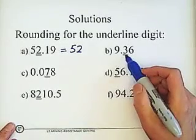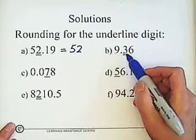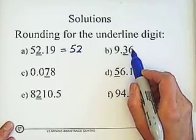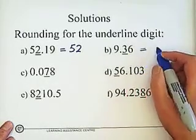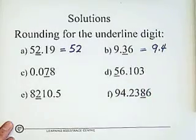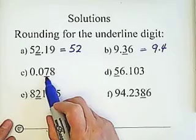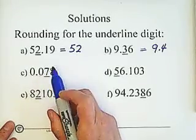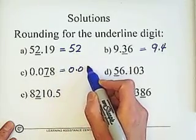The second problem: the underlined digit is in the tenths place on the right side of the decimal point. Check the right side — 6 is greater than 5 — so round up. The answer is 9.4. For the third problem: check the right side of the rounding digit — 8 is greater than 5 — so add 1. The answer is 0.08.